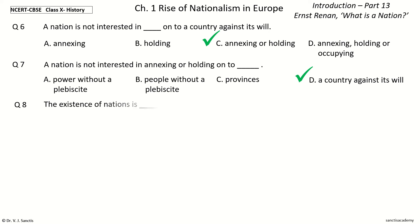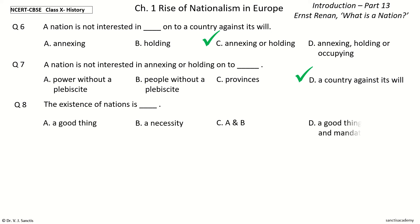Question 8. The existence of nations is dash. The options are: a good thing, a necessity, A and B, a good thing and a necessity mandated by people.